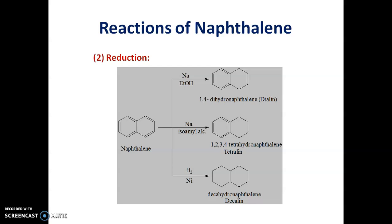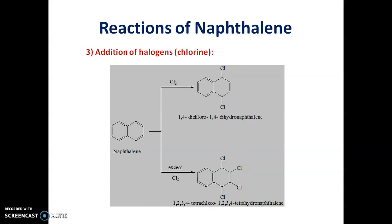it gives tetralene which is also called as 1,2,3,4-tetrahydronaphthalene. This is the structure of tetralene. Naphthalene on reaction with nickel undergoes reduction reaction to give decahydronaphthalene which is called as decalene.